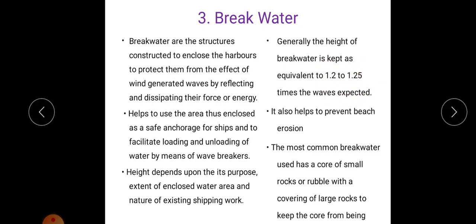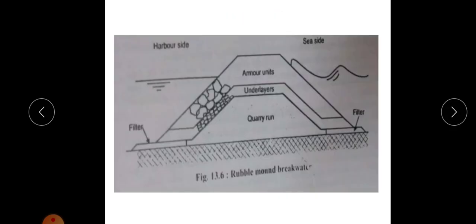This breakwater helps to use the enclosed area as safe anchorage for ships and to help the loading and unloading process, protecting the area from high wind. The height of the breakwater depends upon its purpose, the extent of the enclosed water area, and the nature of existing shipping work. A rubble mound breakwater uses rubbles, gravels, etc.